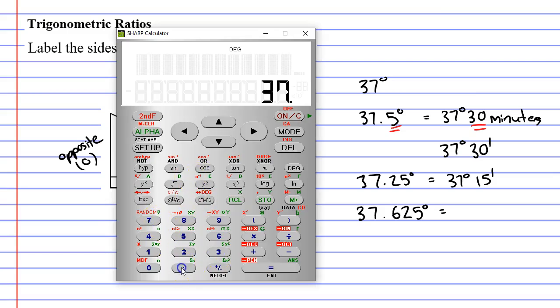We're going to type it in 37.625, and I'm going to press the equal sign. And then you'll notice there's a button on the calculator DMS, which stands for degrees, minutes, and seconds. If I go second function, DMS, it will convert it into degrees, minutes, and seconds. So, this converts to 37 degrees, 37 minutes, and 30 seconds.